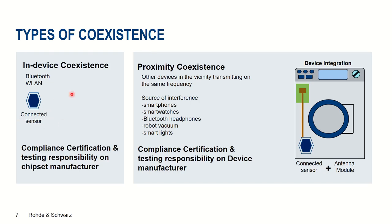There are different kinds of coexistence tests. One is in-device coexistence, normally done by chipset manufacturers who design chipsets with multiple standards on the same chip. They perform conducted tests, connecting directly to the chip and bypassing the antenna module, to make sure they don't have coexistence issues on the same chipset.